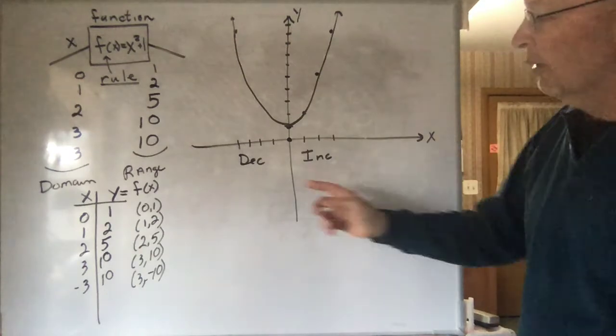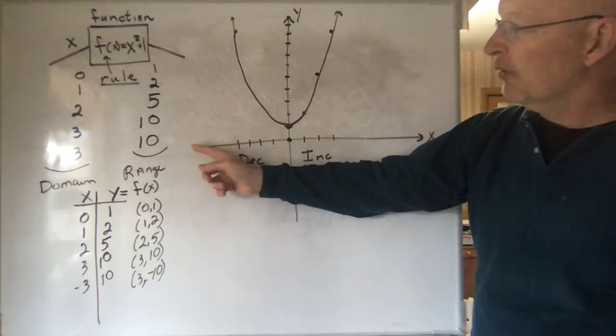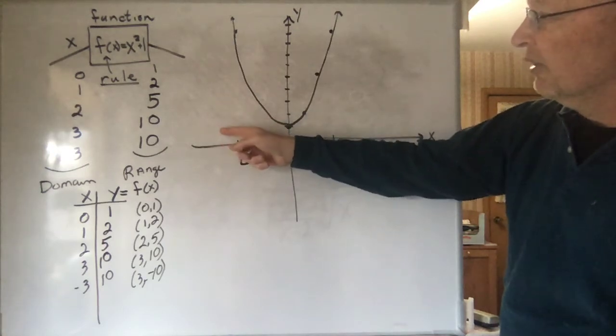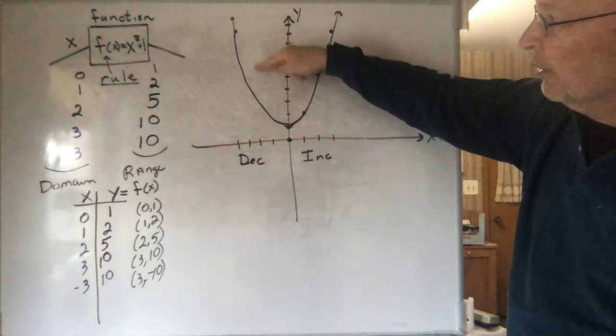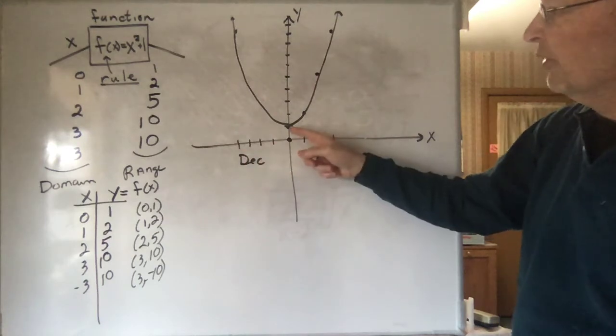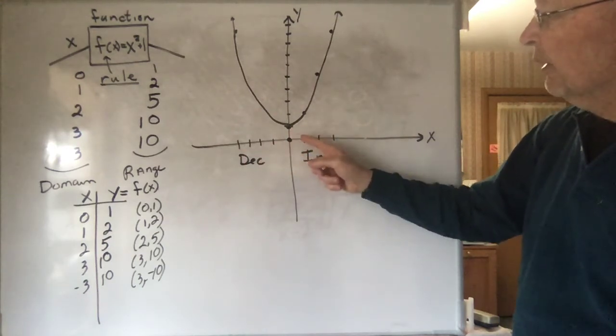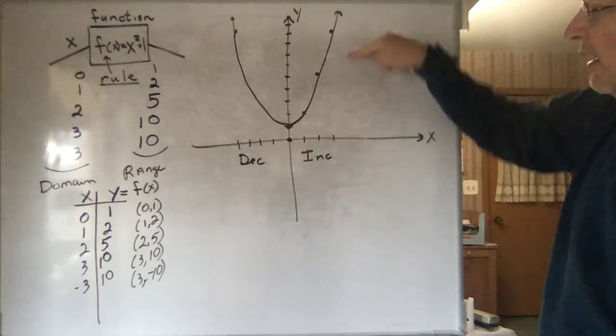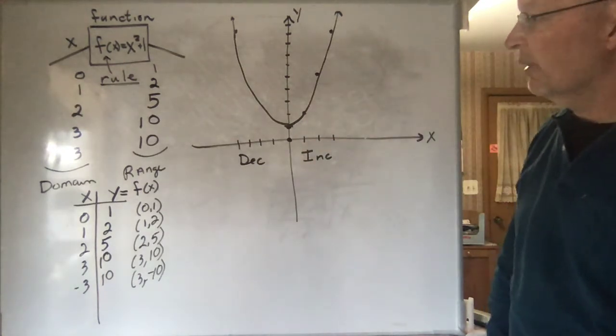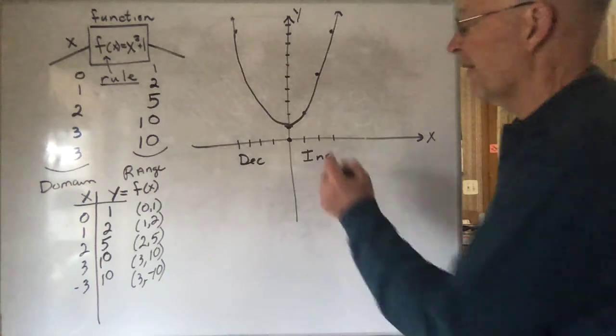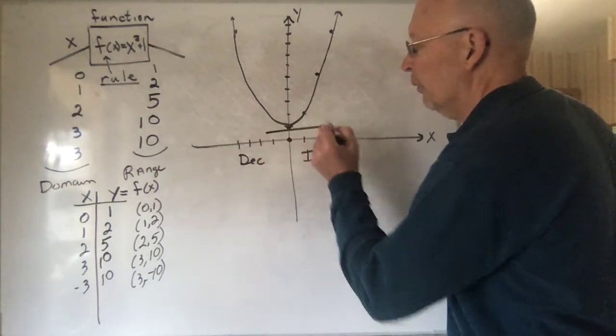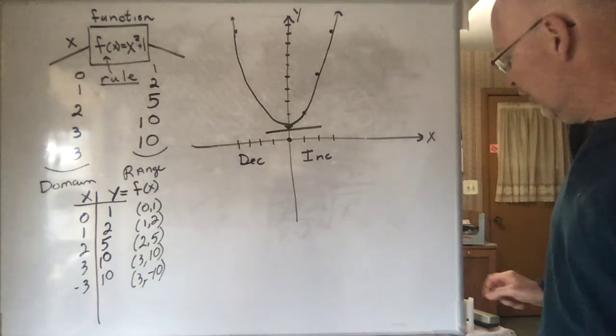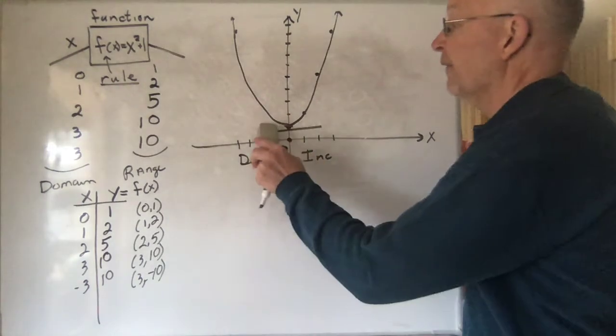We can also use the words decreasing and increasing. When we use those words, what we're referring to is the fact that as you move from left to right, the value of the function is going down. It's decreasing on this interval. And then as soon as you pass 0, now as you continue on, as you go from left to right, it's getting larger, it's getting greater, it's increasing. So, we can also have a constant function, which looks just like that, for example. So, anyway, that's the graph of the function.